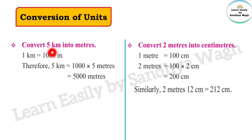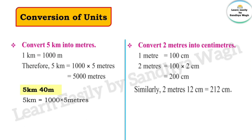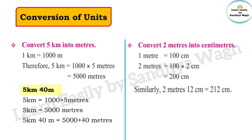So 5 kilometers is equal to 5000 meters. Similarly, for 5 kilometers and 40 meters: 5 kilometers is equal to 5000 meters, and then we add 40 meters. So 5 kilometers and 40 meters equals 5040 meters.